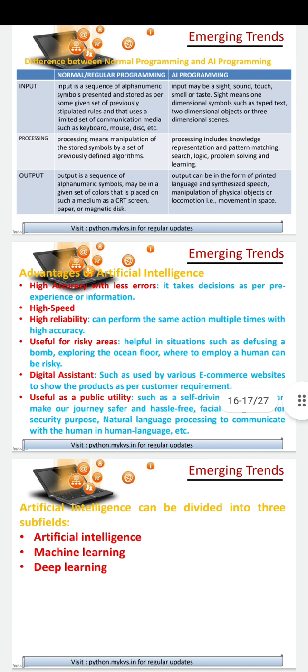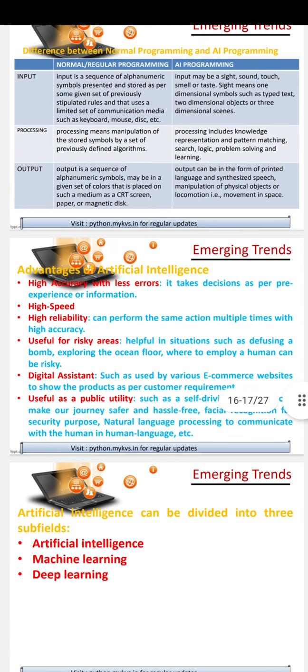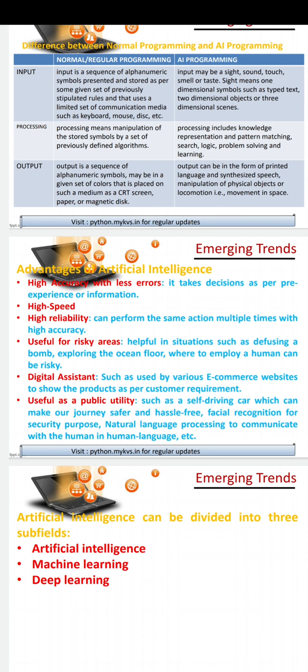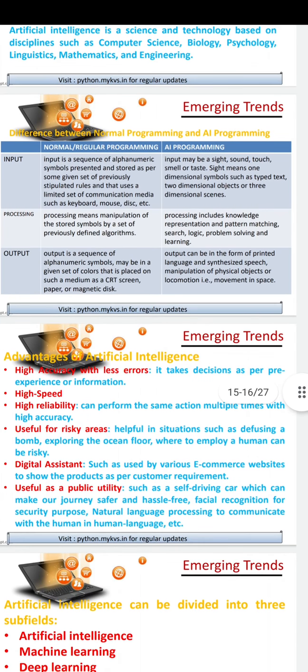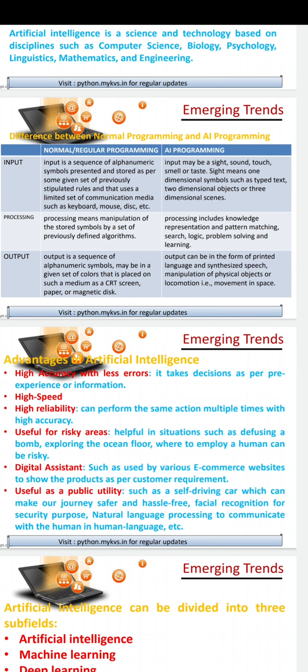So let's see what is the difference between normal programming and AI programming. In normal programming, input is a sequence of alphanumeric symbols, like the programming we do using a mouse, keyboard, etc. In AI programming, input may be sight — for example, we give our eye retina image, or our fingerprint or touch. When we touch our phone, it opens using fingerprint processing.